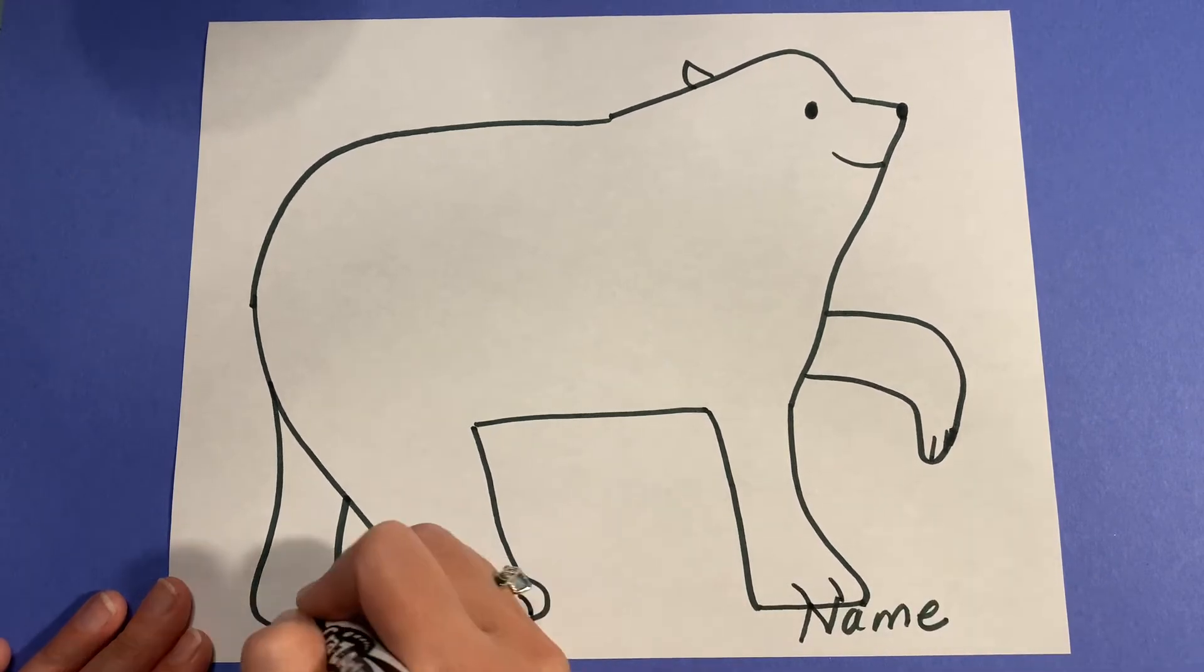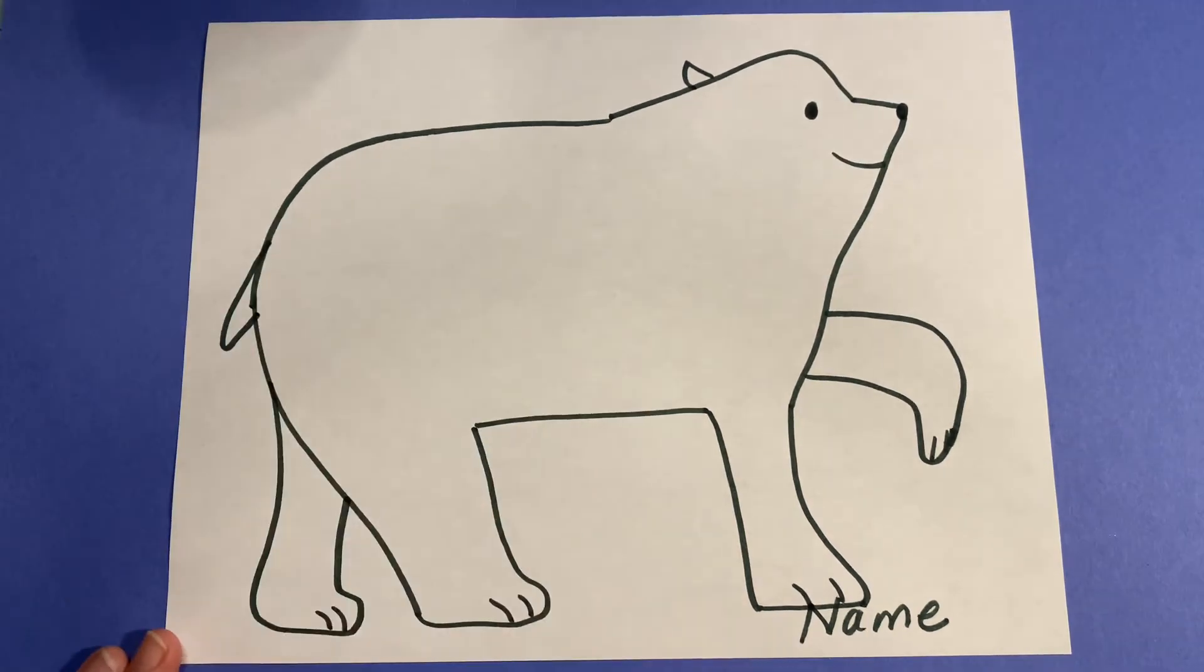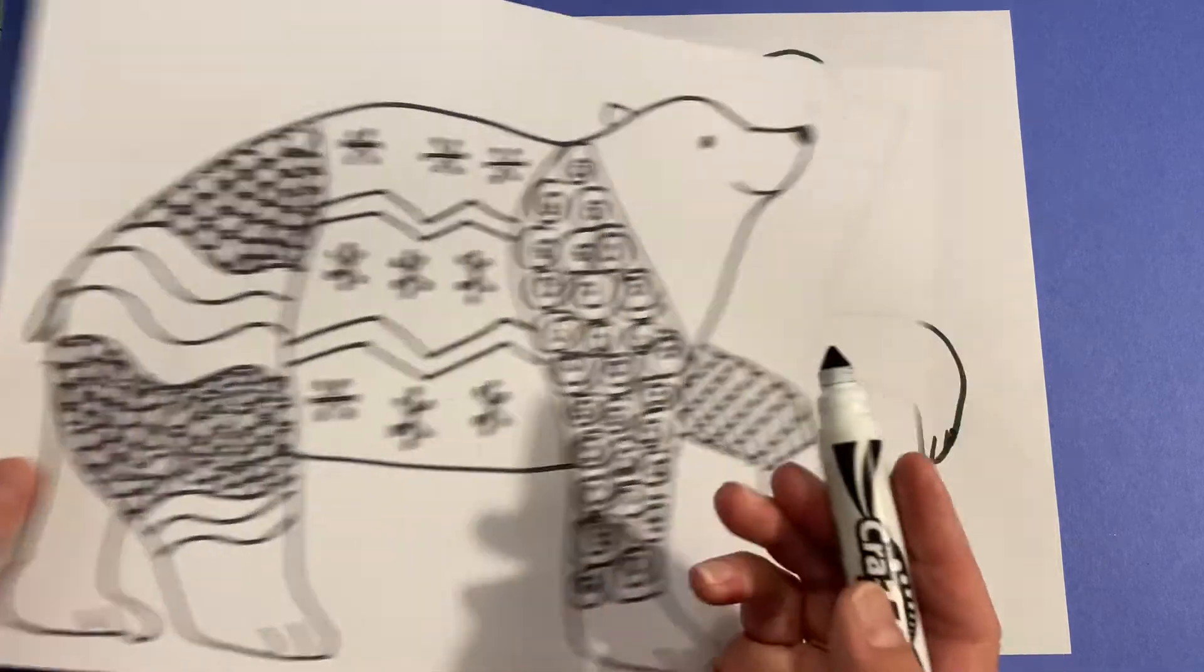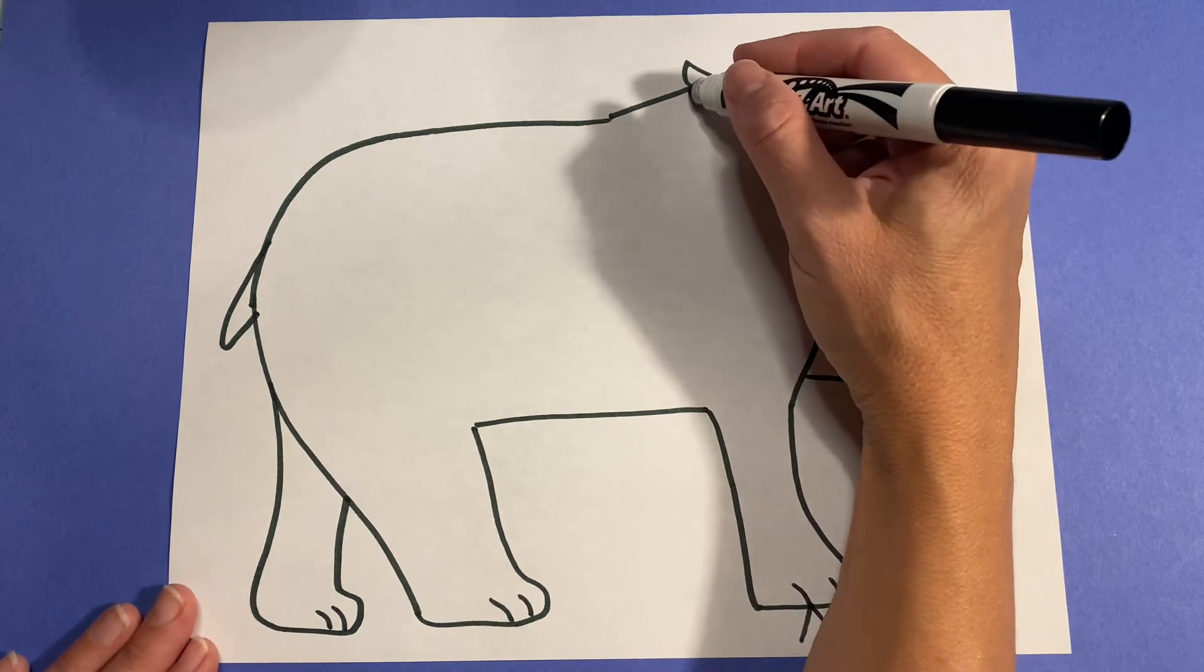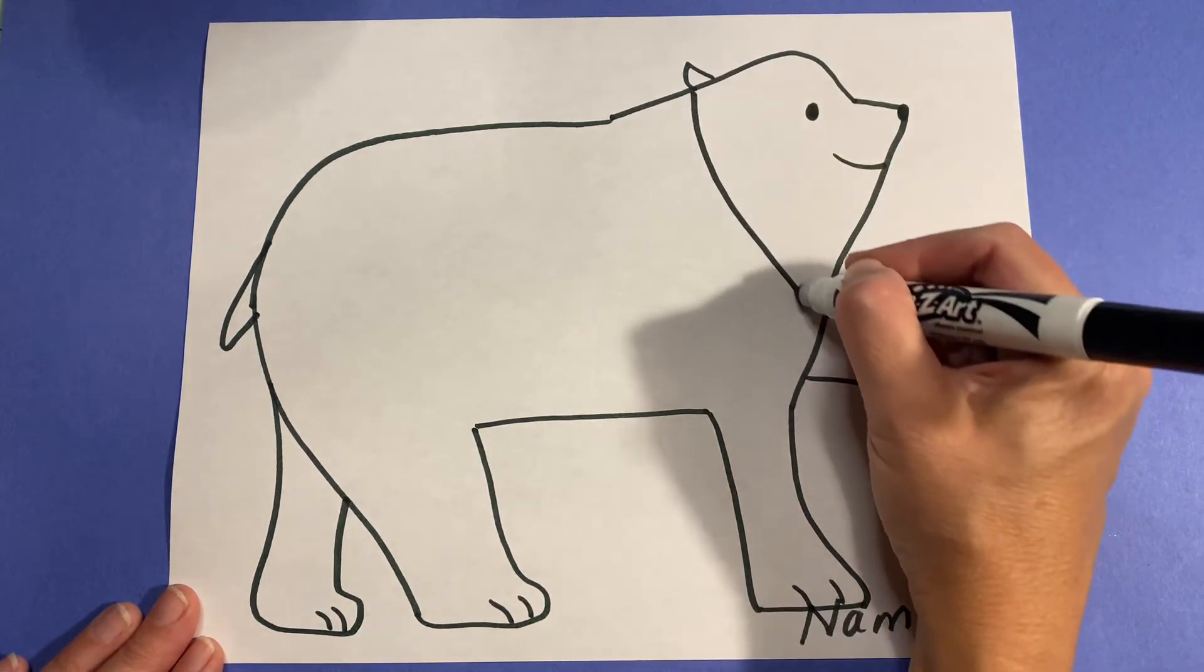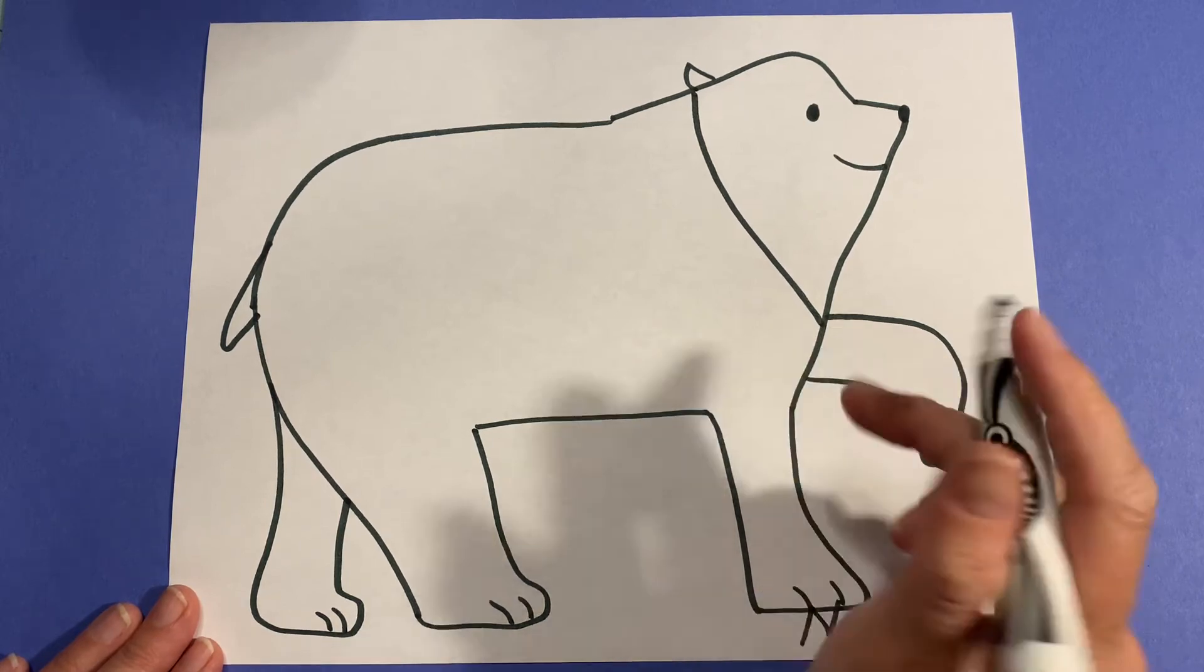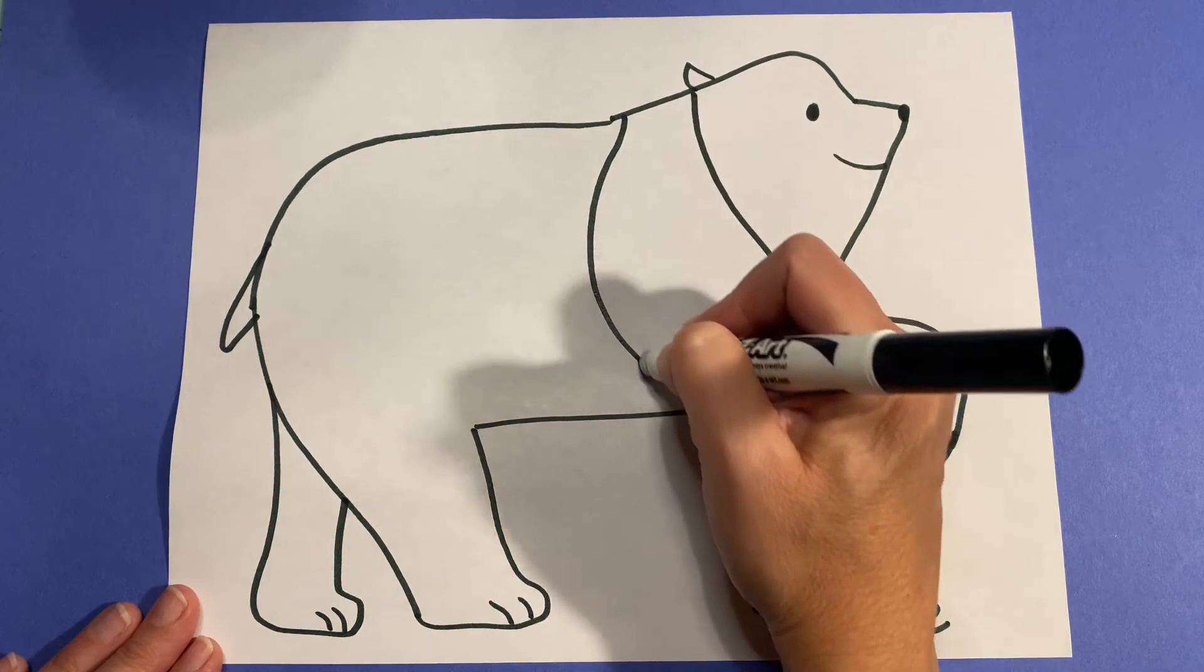Next, boys and girls, we're going to divide up the sections of his body so that we could have a variety of line designs and patterns. So I'm going to start here right below his ear and come down right about where his chest meets his paw or leg.